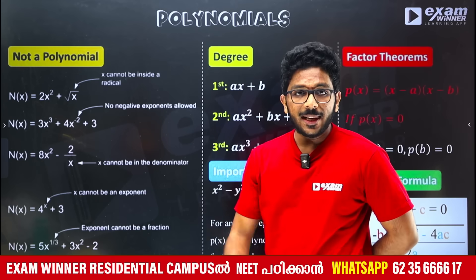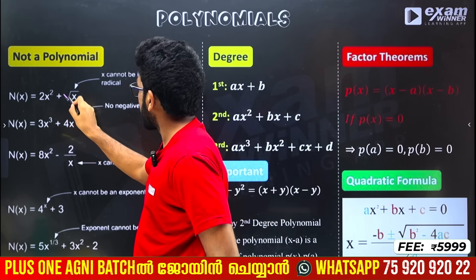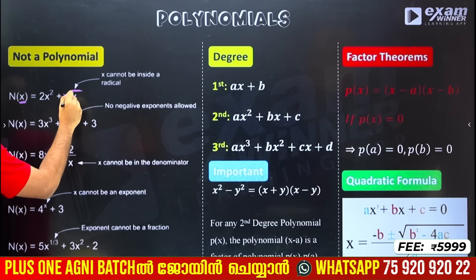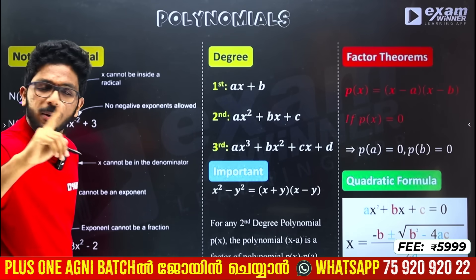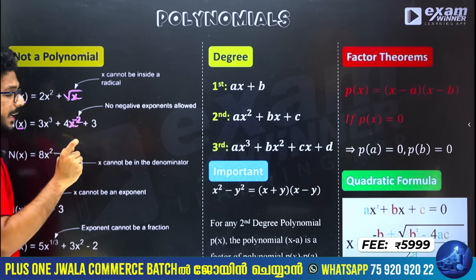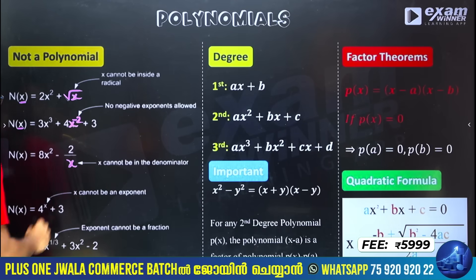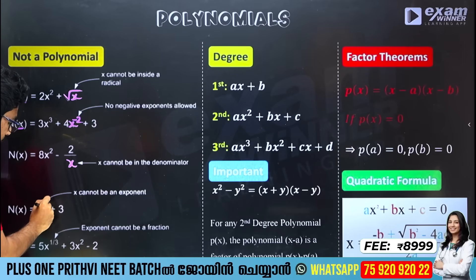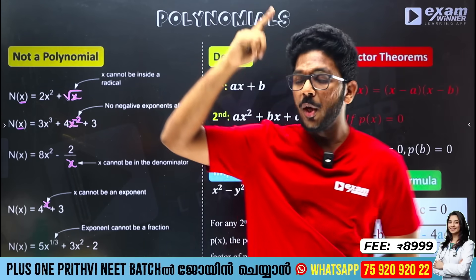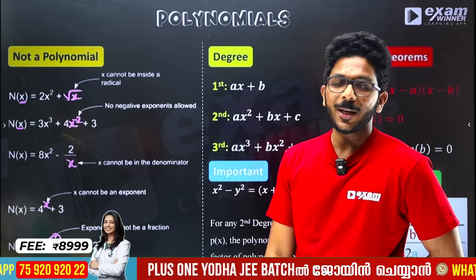What's a polynomial? I'm going to show you a conceptual concept. If x is under a root, that is NOT a polynomial. If x is in a denominator, that is not a polynomial. If x is the exponent — like 4 raised to x — that is not a polynomial. That is clear.